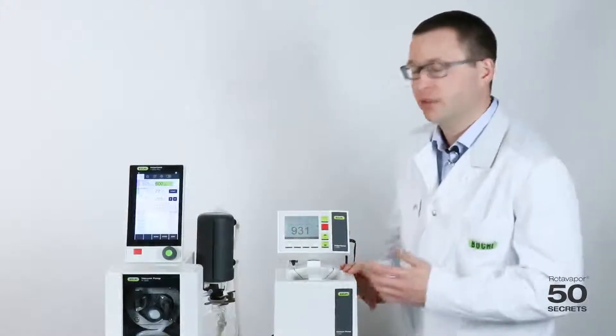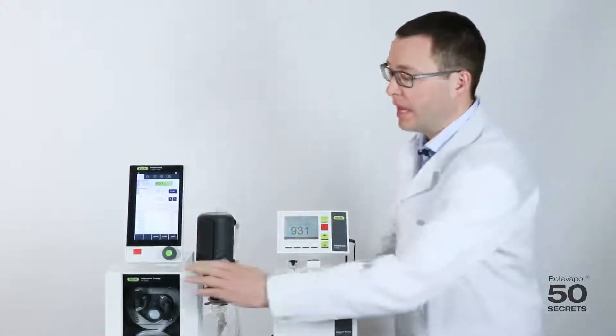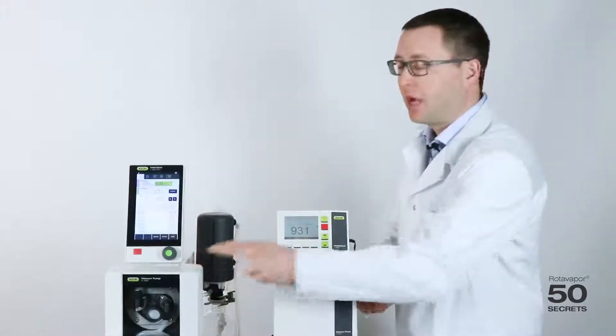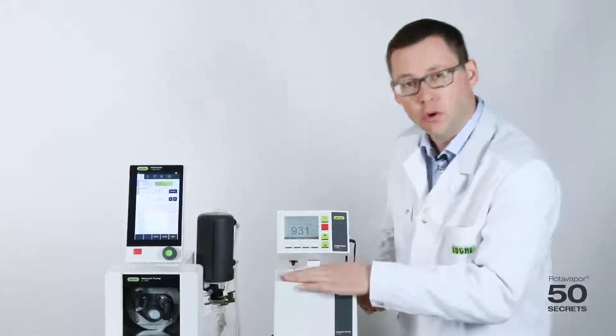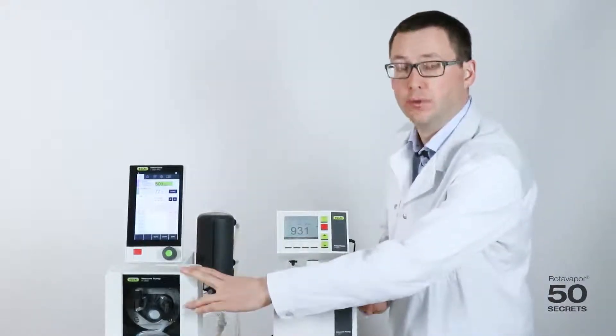Today's secret is about the two different operating modes we have on the V100 vacuum pump and on the V300 V600 vacuum pumps. I would like to explain the on-off operating mode and the speed controlled operating mode.